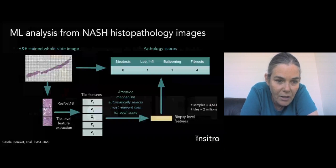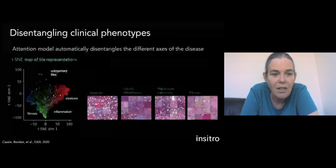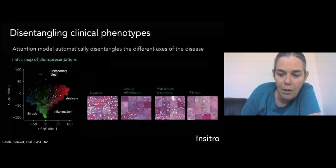So if you see here, this is a TSNE embedding of the different tile representations. And you can see that it separated out the tiles that had steatosis, the tiles that had inflammation, the tiles that had fibrosis, and really picked up on a correct biological representation of what these different components look like in the image.